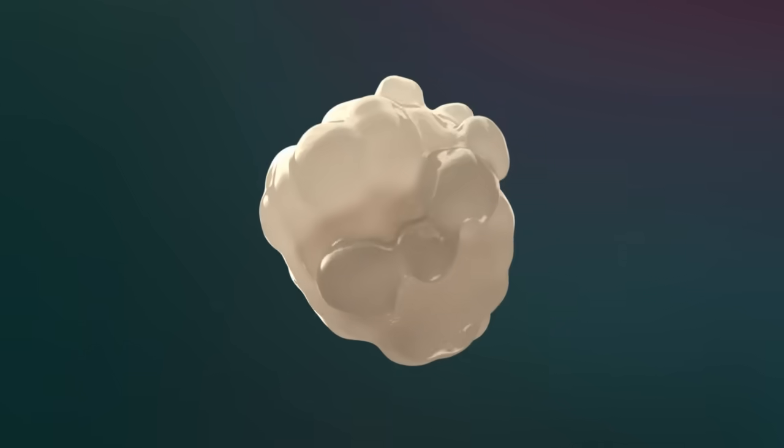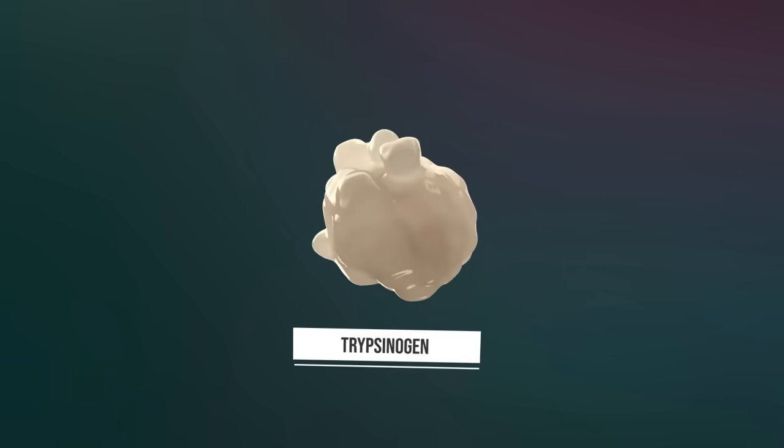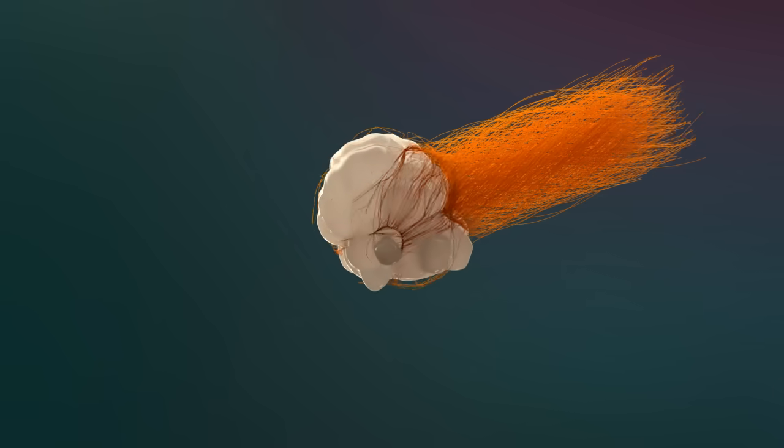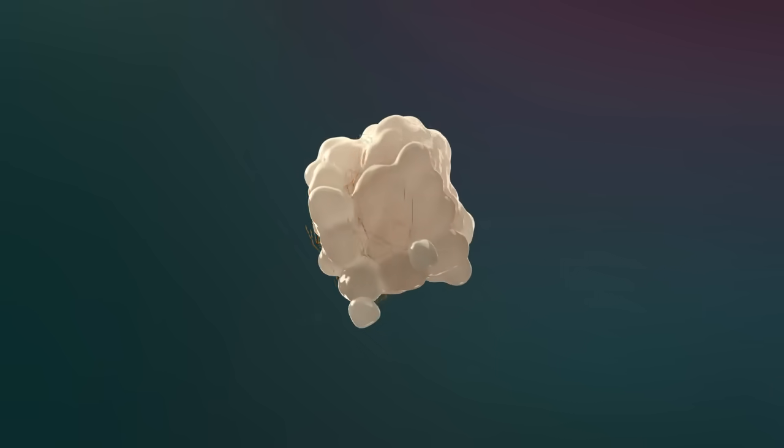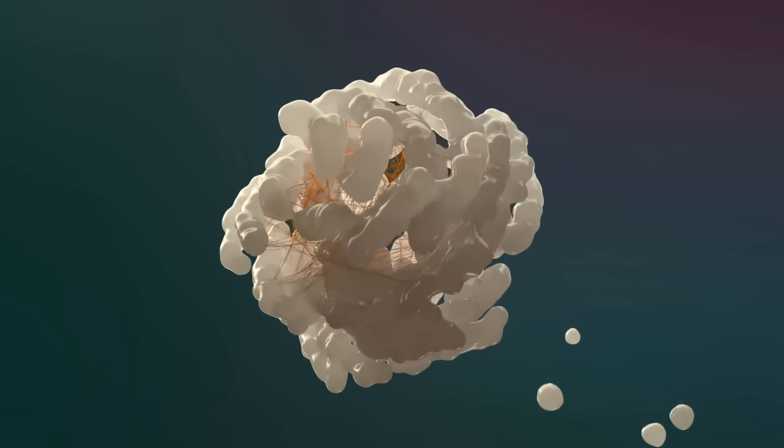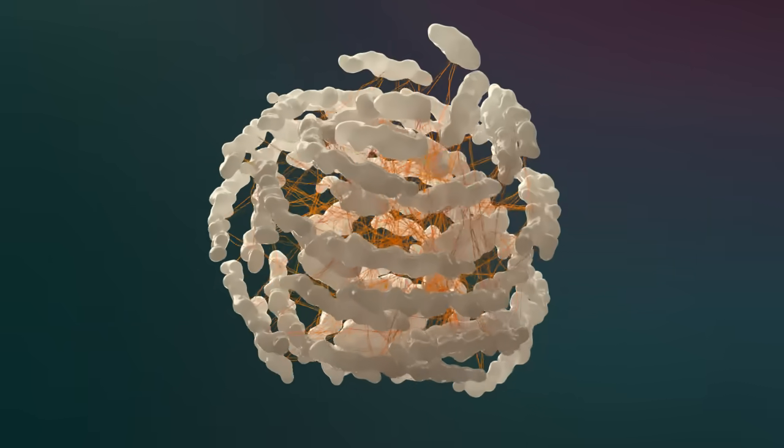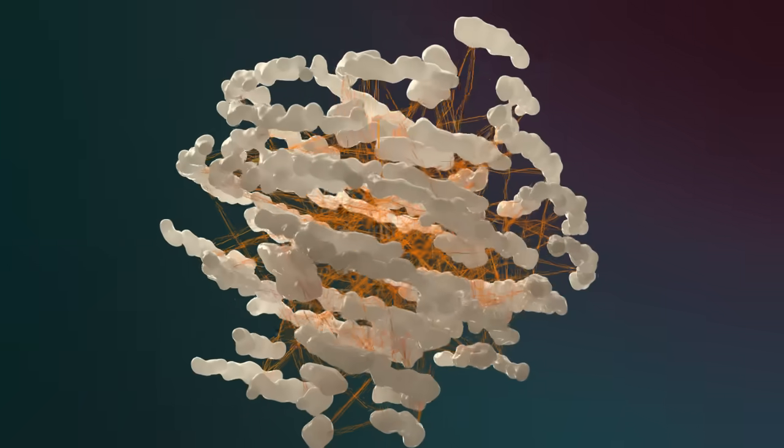Pancreatic juice also contains proenzymes. It is only through enterokinase released by the duodenum wall that the proenzyme trypsinogen becomes trypsin, which can split proteins and activate other trypsinogens.